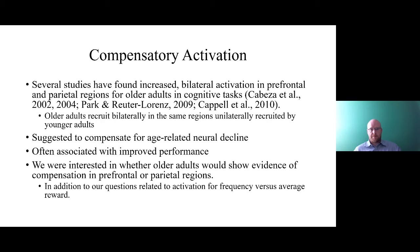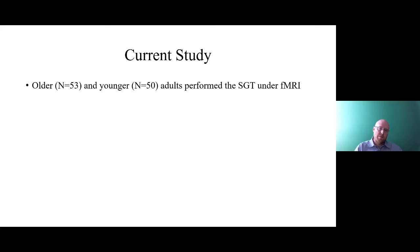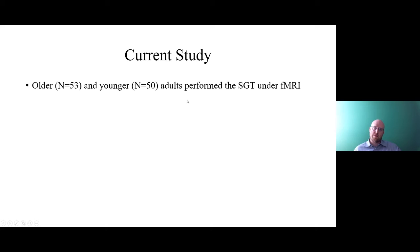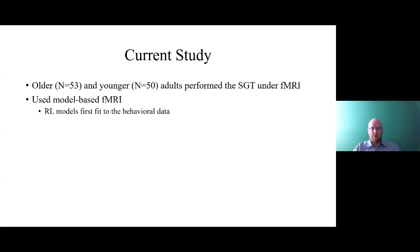For the current study, we targeted about 50 participants per group, obtaining 53 older adults and 53 younger adults whose data we could use — a few more were run but excluded for motion artifacts. Participants performed the Soochow Gambling Task while undergoing fMRI. We used model-based fMRI to examine and compare younger and older adult behavior. Briefly, we first take the behavioral data, fit our RL models to it, derive model components — expected values and prediction errors — on a trial level, then use these as fMRI regressors.